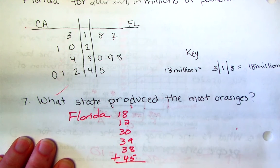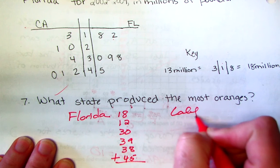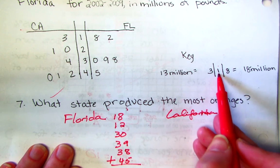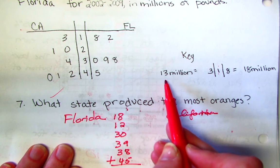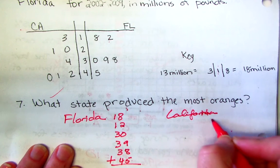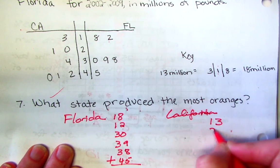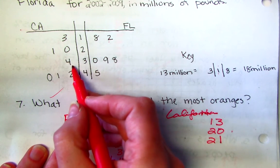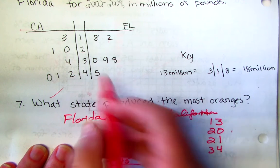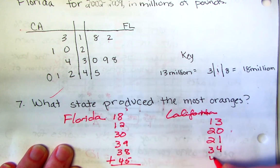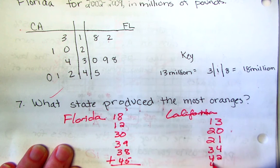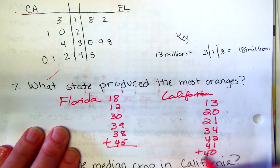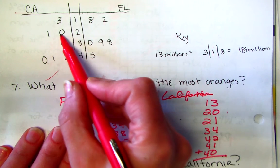And then you add them up. I'm gonna do the same for California. But remember how we have to read it. Our key helps us remember how to read it. So 1 3 is 13, 2 0 is 20, 2 1 for 21, 3 4 for 34, 4 2 for 42, 4 1, and 4 0. And I need to add those all up too.